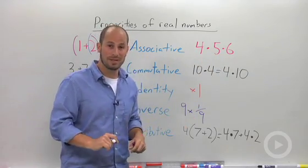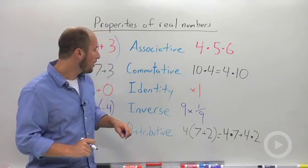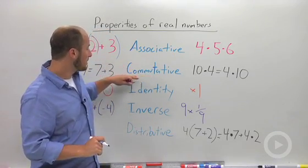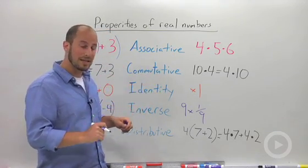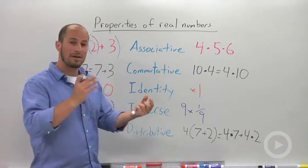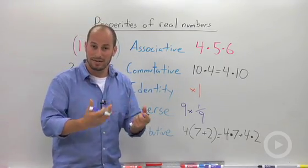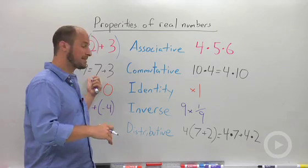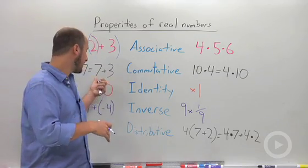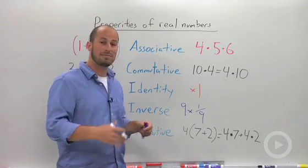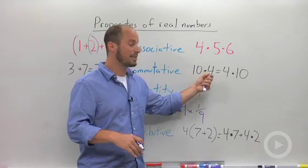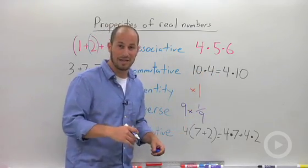Another property is commutative. Basically what commutative is saying is that the order the numbers are listed doesn't matter either. So if we are adding 3 plus 7, it's going to be the same thing as 7 plus 3. Likewise with multiplication, 10 times 4 is equal to 4 times 10. You can easily try those out for yourself.